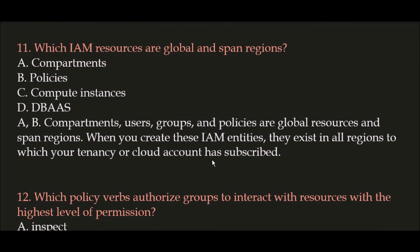Question 11: Which IAM resources are global and span regions? Option A: Compartments, Option B: Policies, Option C: Compute Instances, Option D: DBaaS (Database as a Service). The correct answers are Option A and B — compartments and policies. Compartments, users, groups, and policies are all global resources and span regions. Where you create these IAM entities, they exist in all regions to which your tenancy or cloud account has subscribed.